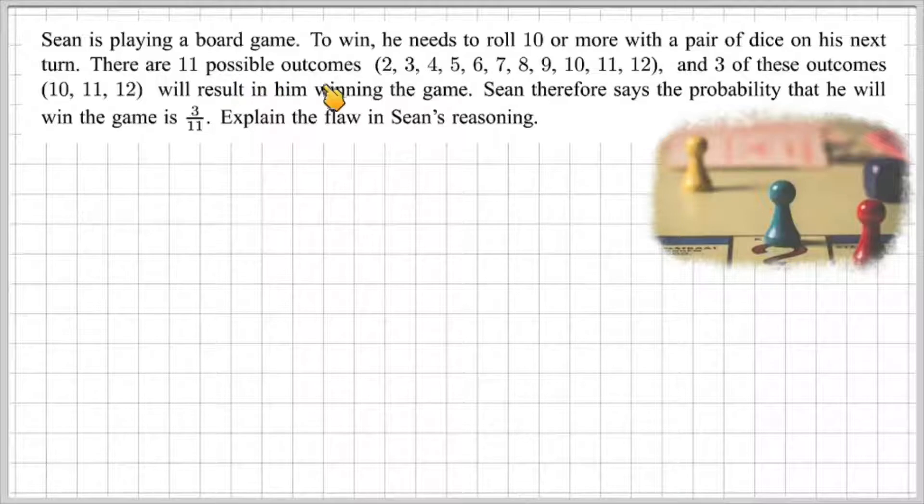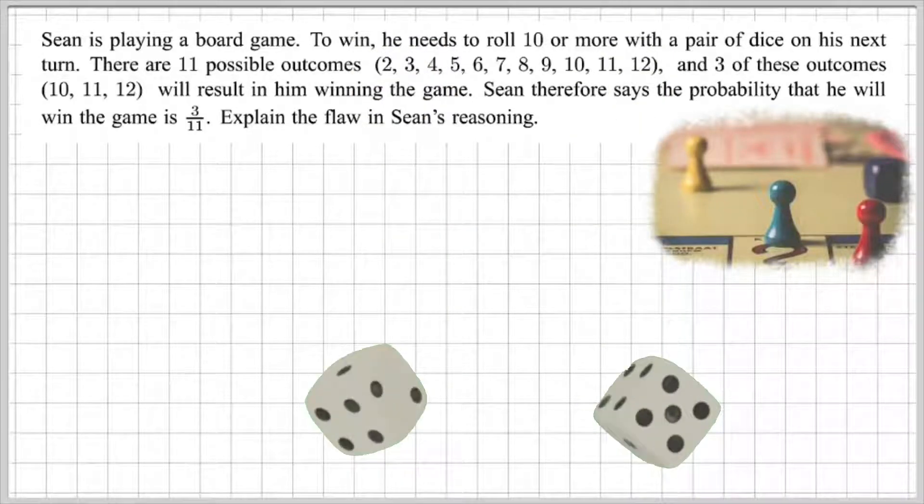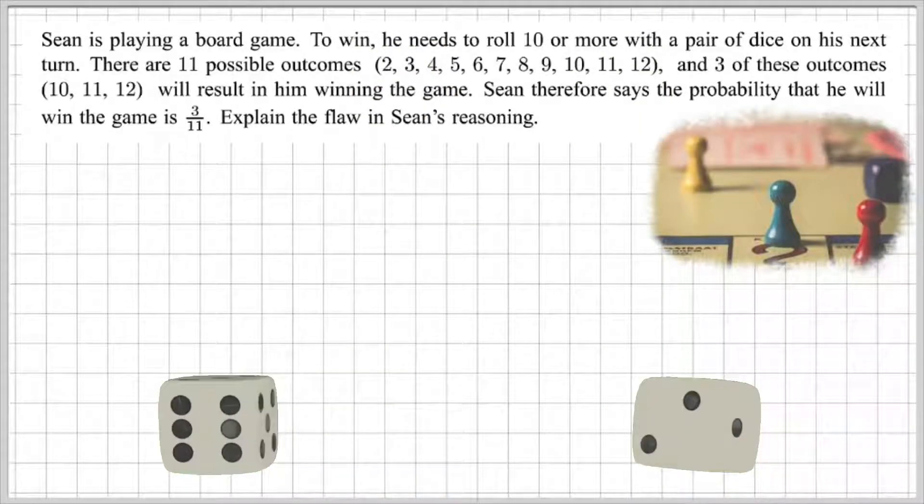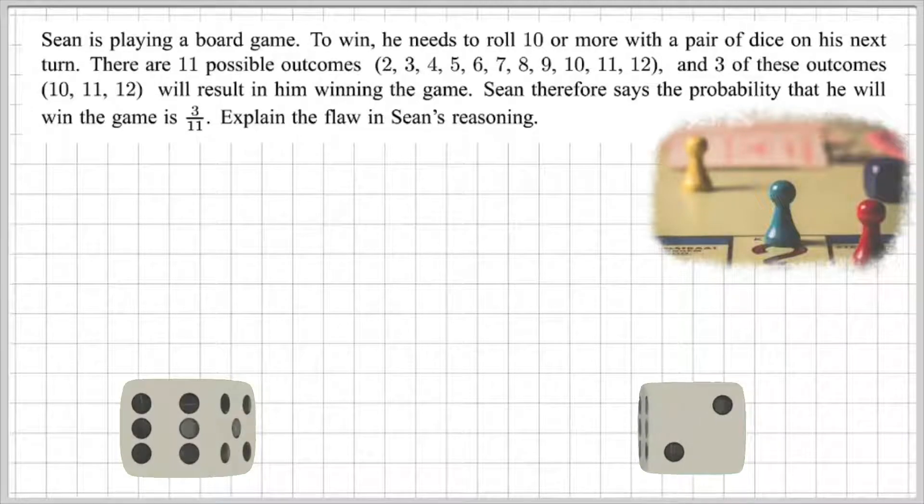There are 11 possible outcomes, 2, 3, 4, 5, 6, 7, 8, 9, 10, 11, and 12. So think about it. When you're rolling two die, if you roll one die and the second die, then these are the possible outcomes that you could get.